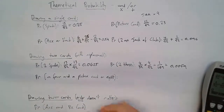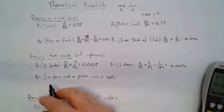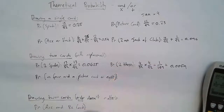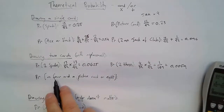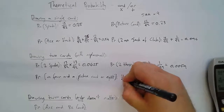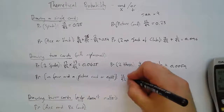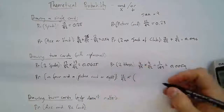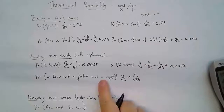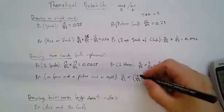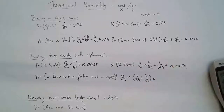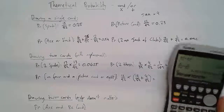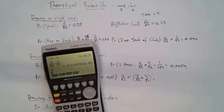Now: probability of a four AND a picture card or an eight. It's handy to think of this as: the first card is a four, and the second card is a picture card OR an eight. The first card — there are 4 fours out of 52, which is times. The second card could be a picture card (12 of them) or an eight (4 of them).